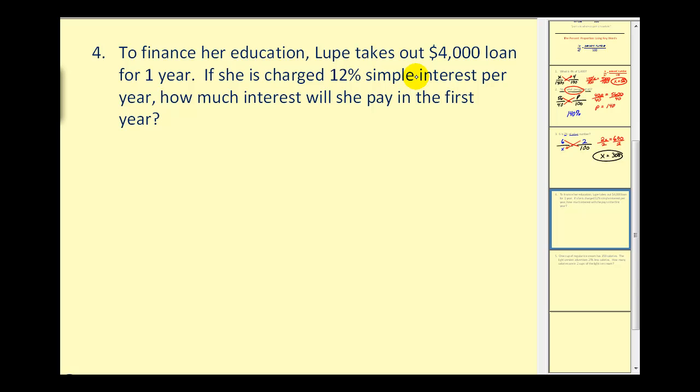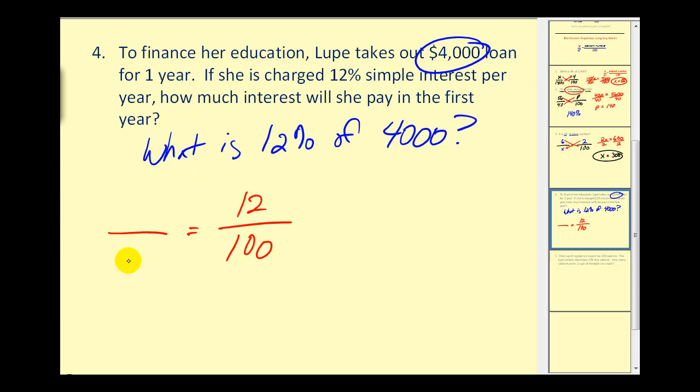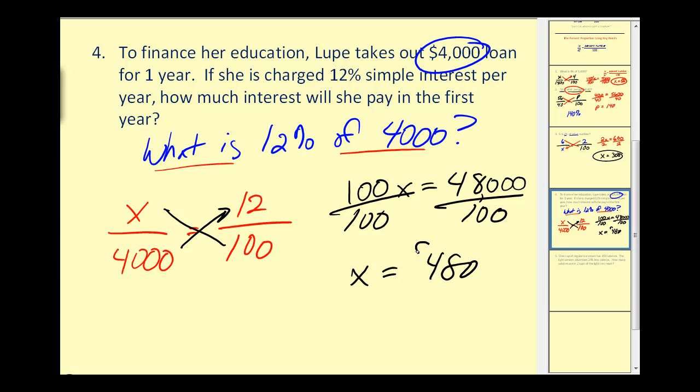To finance her education, Lupe takes out a $4,000 loan for one year. If she is charged 12 percent simple interest per year, how much interest will she pay in the first year? If she's charged 12 percent interest, the question is: what is 12 percent of the loan amount, which is 4,000? Once we reword this, we can write our proportion. We have our percentage: 12/100. It's 'is over of'. We don't know the number associated with 'is' or the part, so that will be our unknown. But we do have the 'of', which is 4,000. Cross products: 100x equals 4,000 times 12, which equals 48,000, divide by 100. X equals 480. So she will pay $480 interest for that first year.